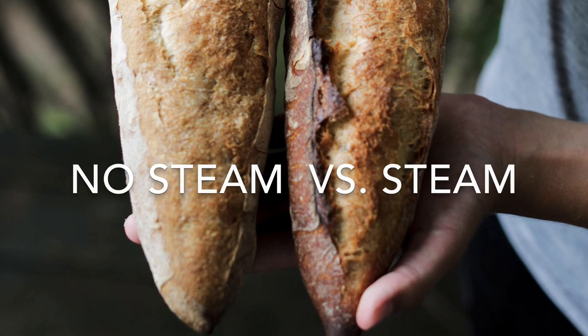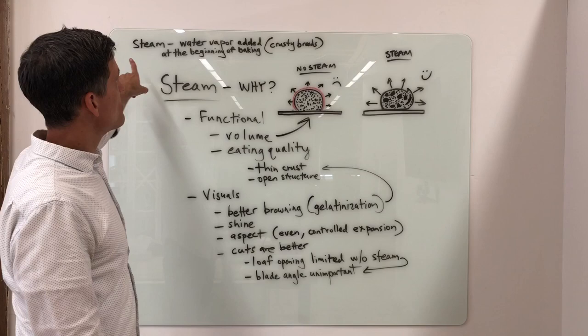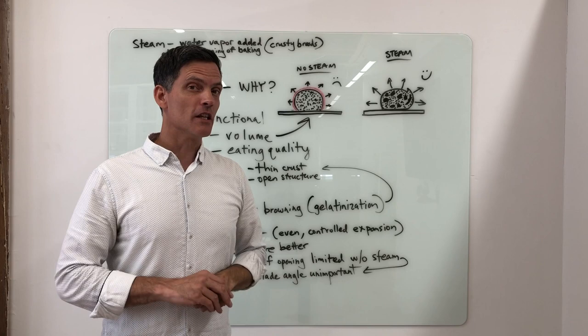So let's talk through this. What is steam? Steam is water vapor which is added at the beginning of baking. There are a lot of ways to do it. If you've been watching any of the videos, you've seen me adding water to a preheated cast iron pan.